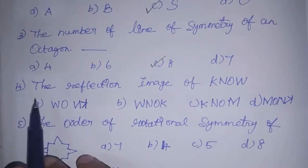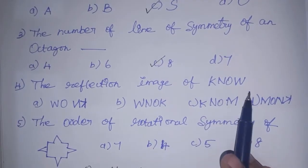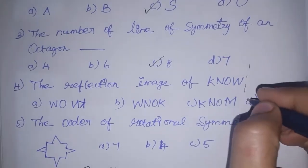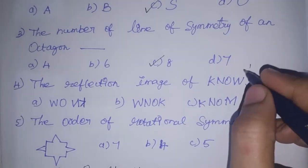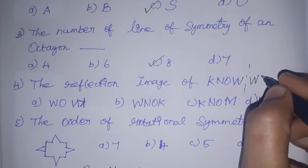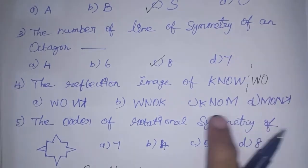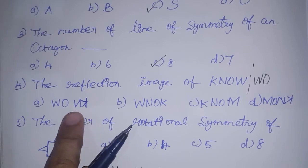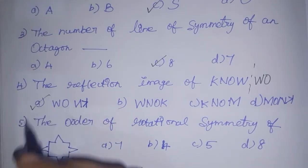Reflection image of K, N, U, W — how does this reflect? Can you see here how it reflects? There will be a W or O among the options. The answer is N and K. So option A is correct.